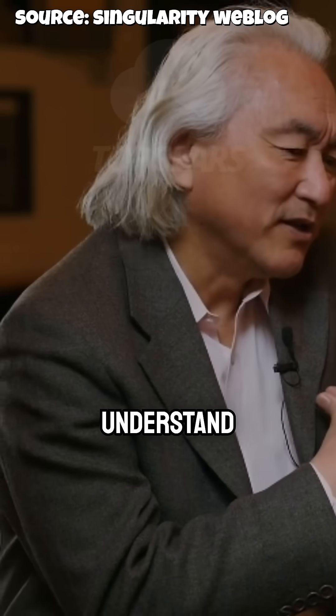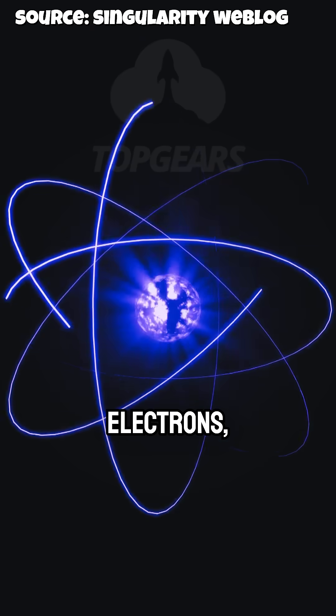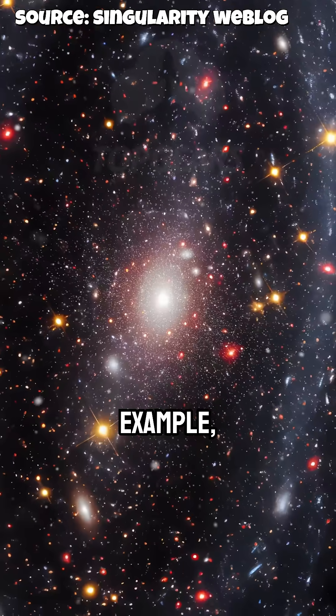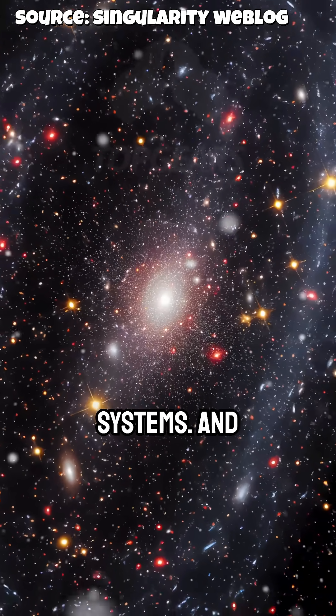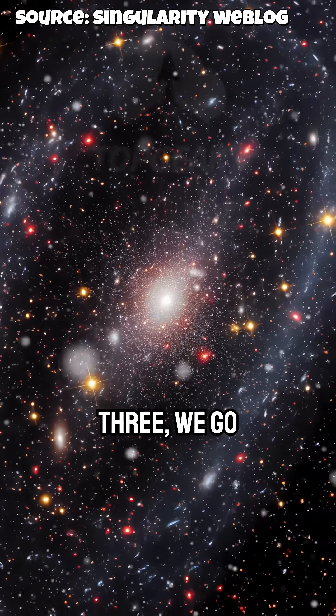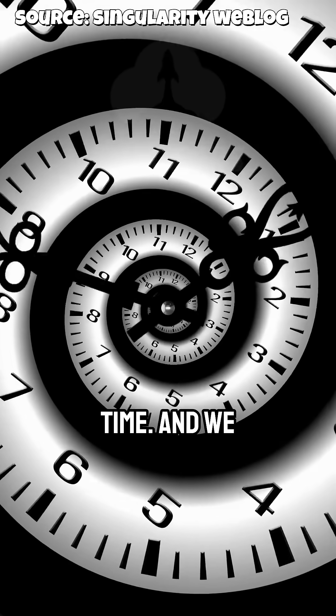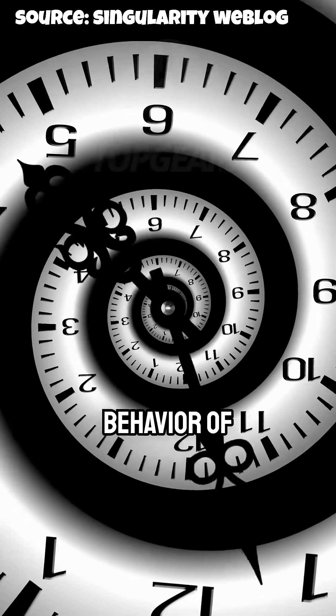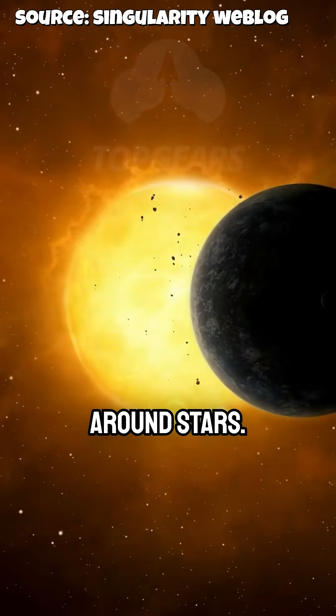Then we try to understand their relationship to other electrons, other planets, stars, for example, creating solar systems. And then stage three, we go forward in time, and we make predictions about the future behavior of planets going around stars.